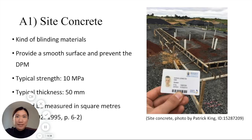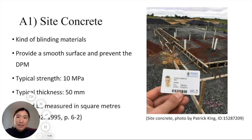My name is Nisu and I'm doing the A1 and A2 parts. A1 is about site concrete. Site concrete is a blinding material which is laid above the hard fill to provide a smooth surface and prevent the DPM. The typical strength of site concrete is 10A and typical thickness is 50mm. According to New Zealand Standard 4202, blinding concrete should be measured in square meters with the thickness stated.